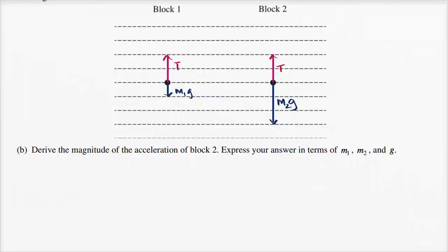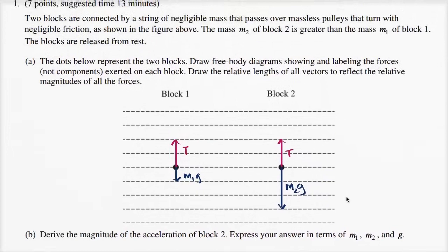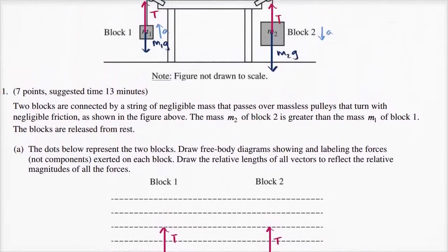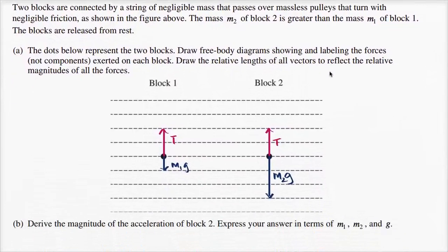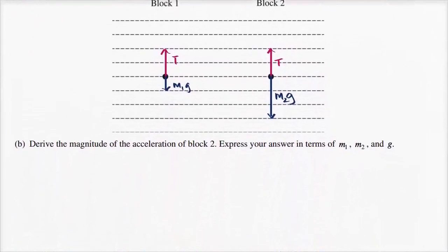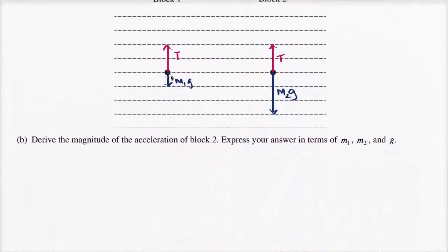Let's tackle Part B now: derive the magnitude of the acceleration of block two, expressed in terms of M1, M2, and G. Try to pause the video and work through it yourself. We already worked through Part A based on the diagram, covered in a previous video. We've already drawn the free body diagrams, which will help us determine the acceleration of block two.